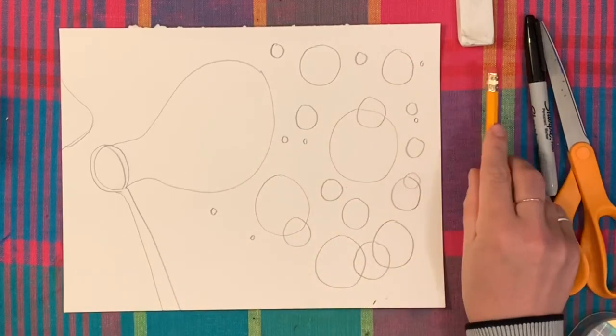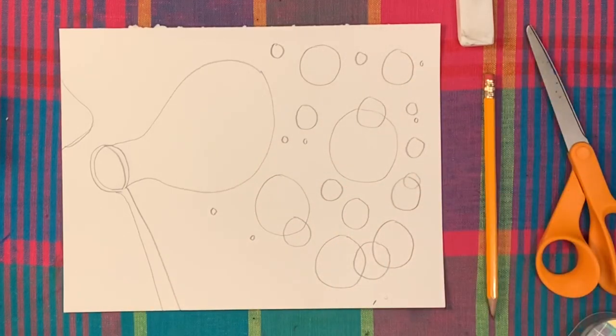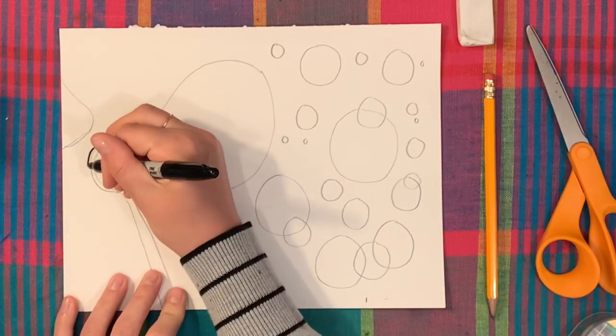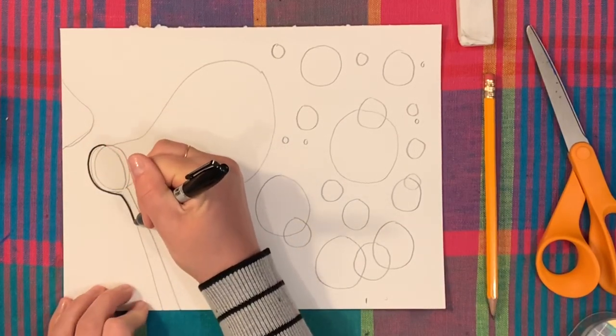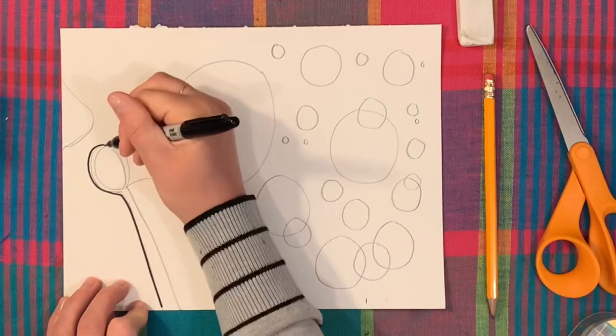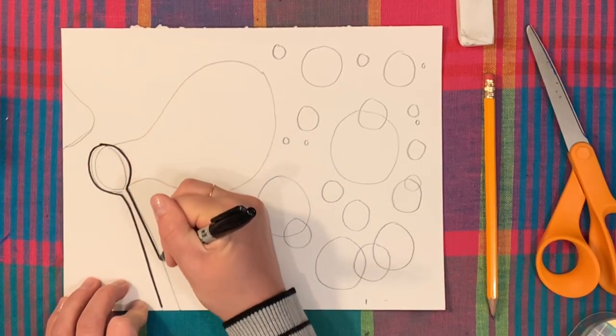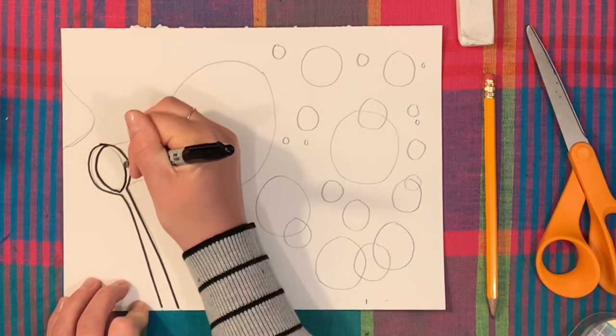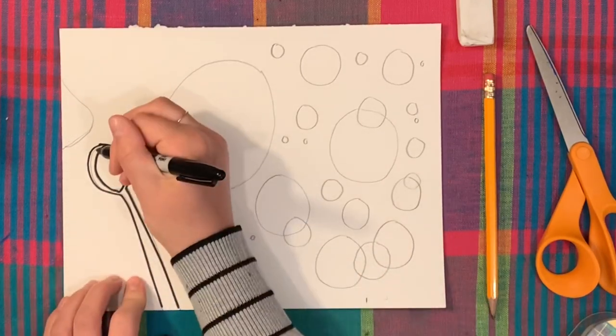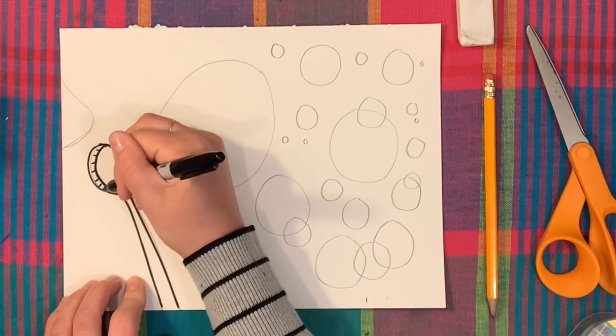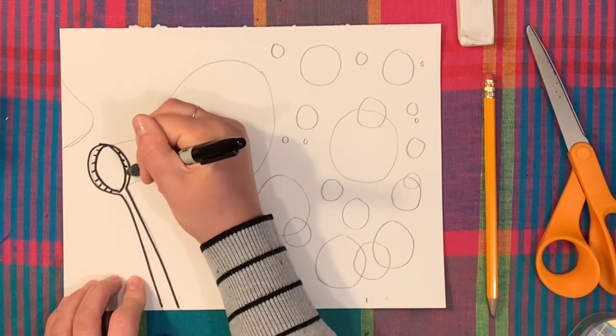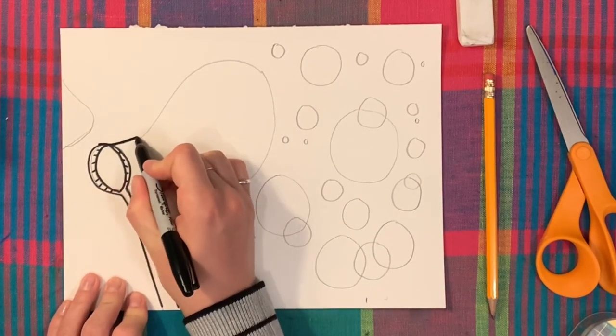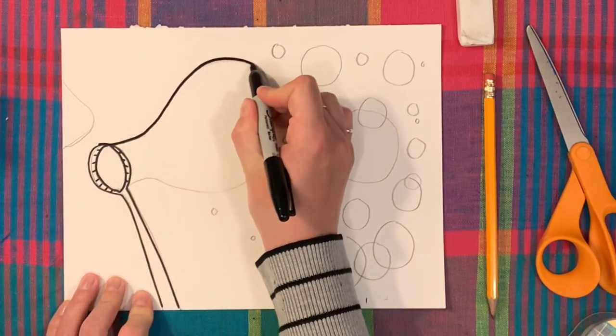So now I'm done with my pencil. I'm going to grab my Sharpie, and I'm just going to go over all of my lines. And I'm trying my absolute hardest to stay on my pencil line. That way, I don't have as much erasing to do when I'm done. And then don't forget the texture on your wand. When you look at bubble wands, there's usually little lines around the edge. Now I'm just going to trace over all my shapes.